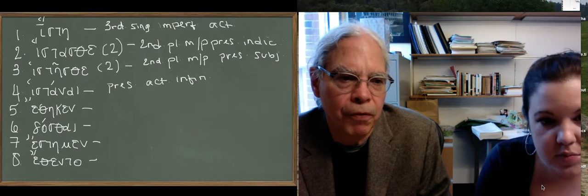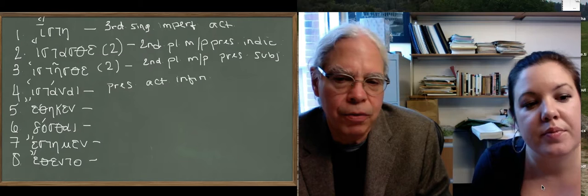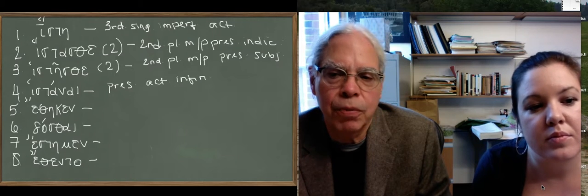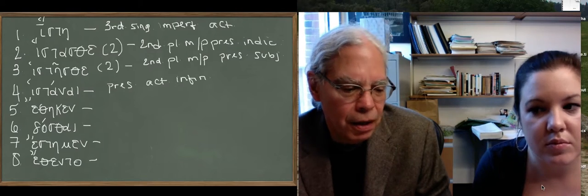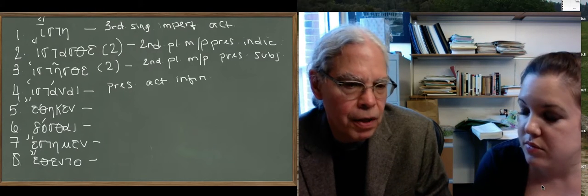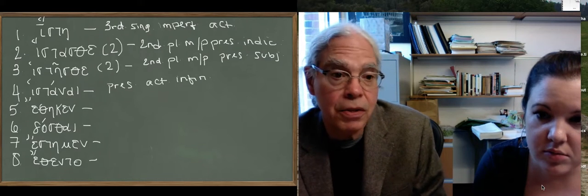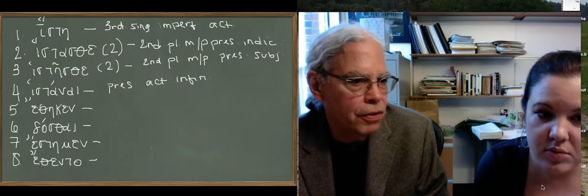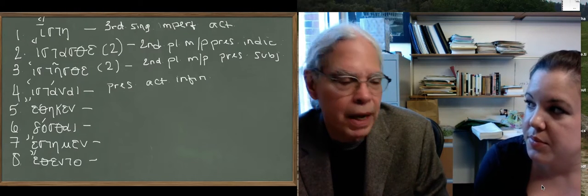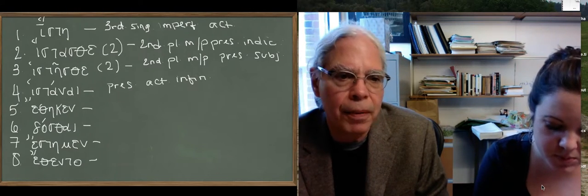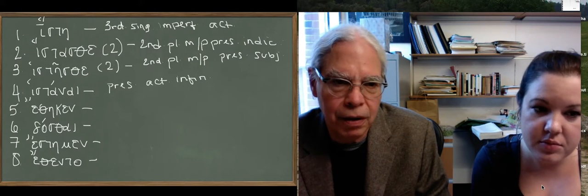For the next form, five, we have to add one additional small feature to our list of differences between the athematic verbs and the regular verbs. And here's the difference for three of the four athematic verbs. The aorist in the singular has an additional suffix, not an s, but a kappa.